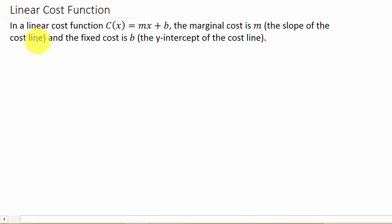So, in a linear cost function, C(x) is equal to mx plus b. You probably recognize that from y equals mx plus b. We're just using C(x) instead of y to represent the cost function. The marginal cost is m, which is the slope of the line. And the fixed cost is b, which is the y-intercept of your cost function.